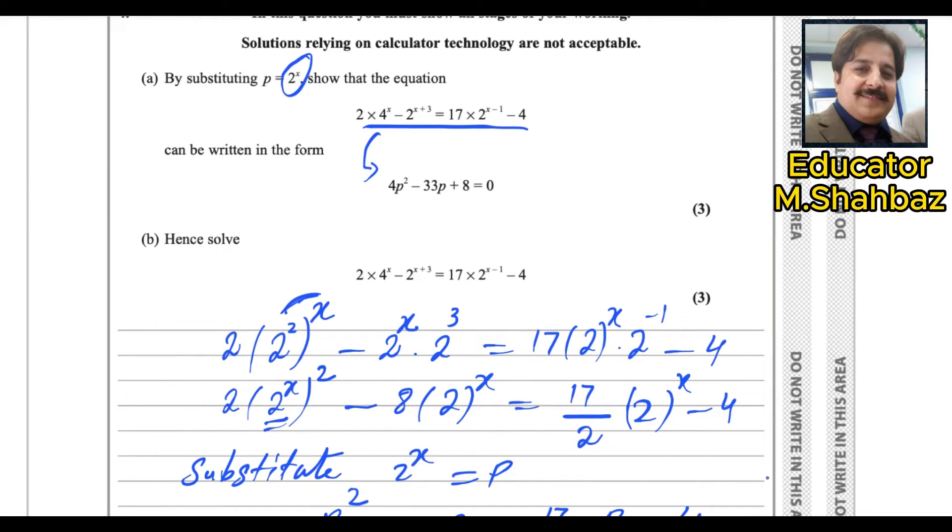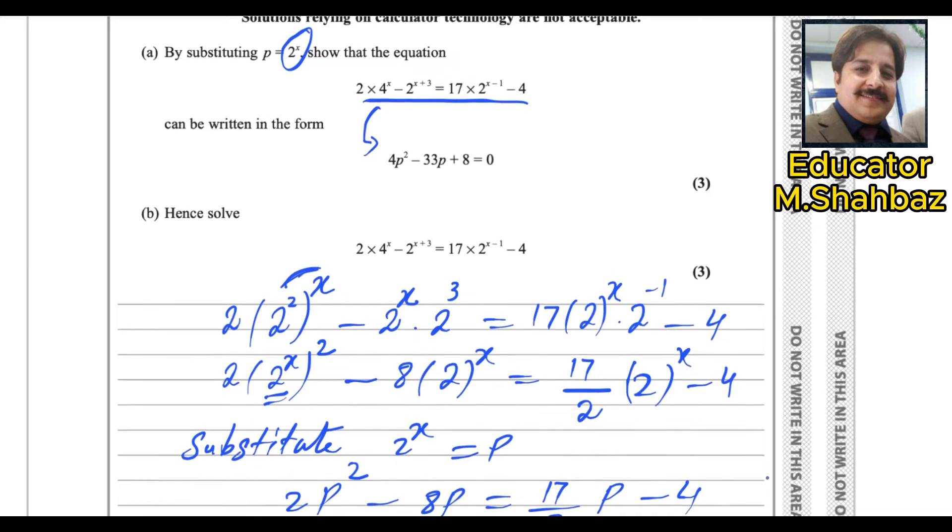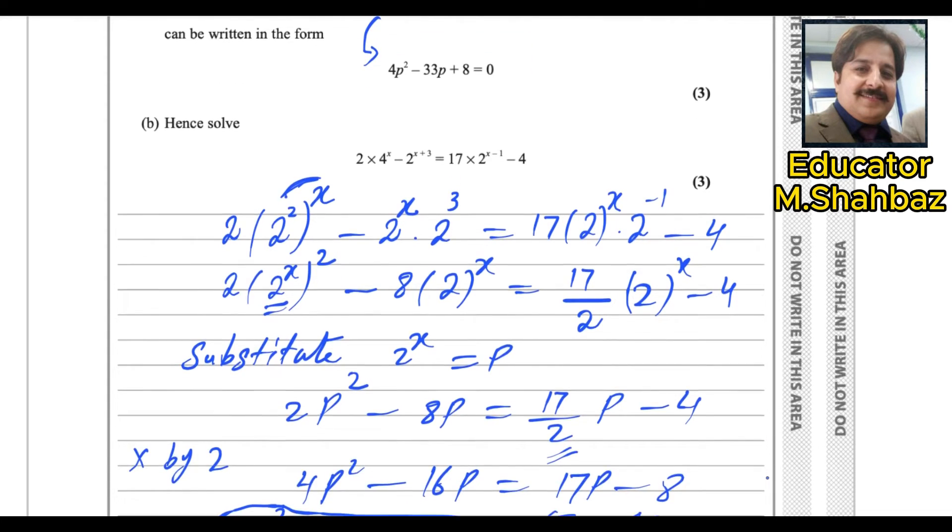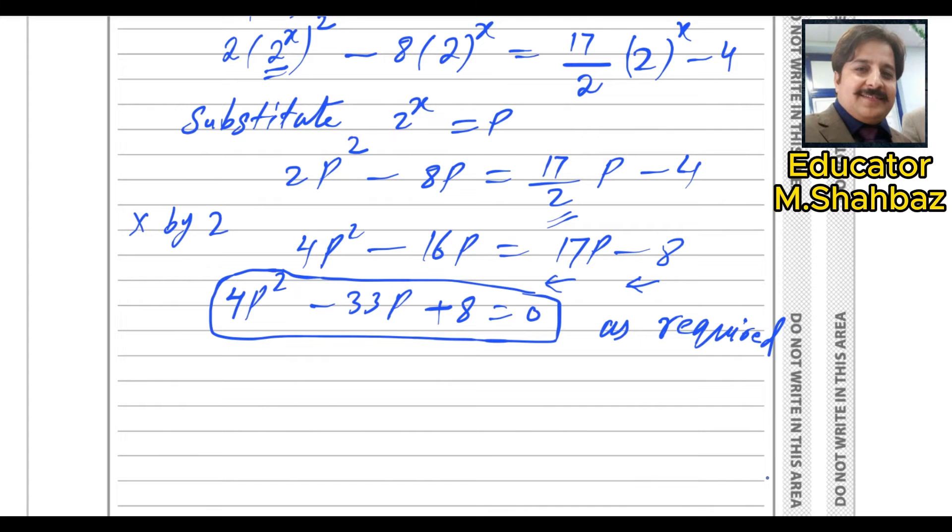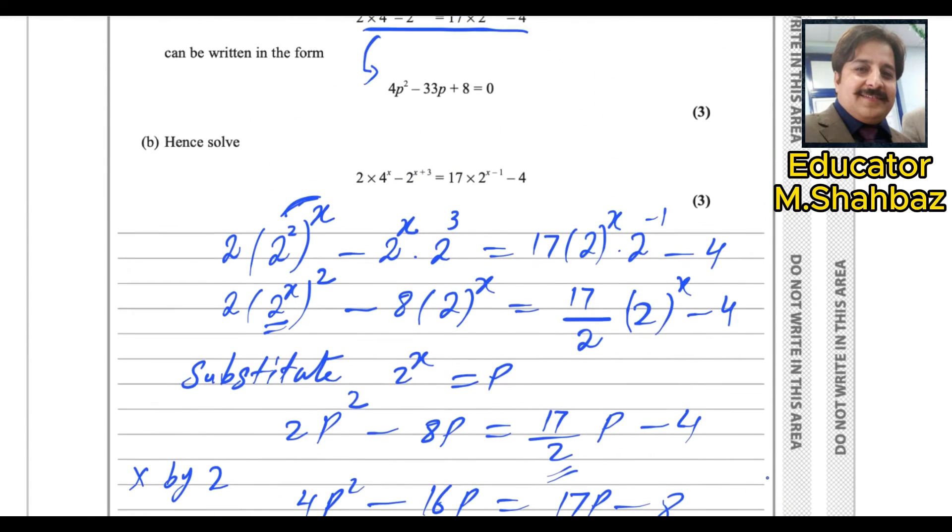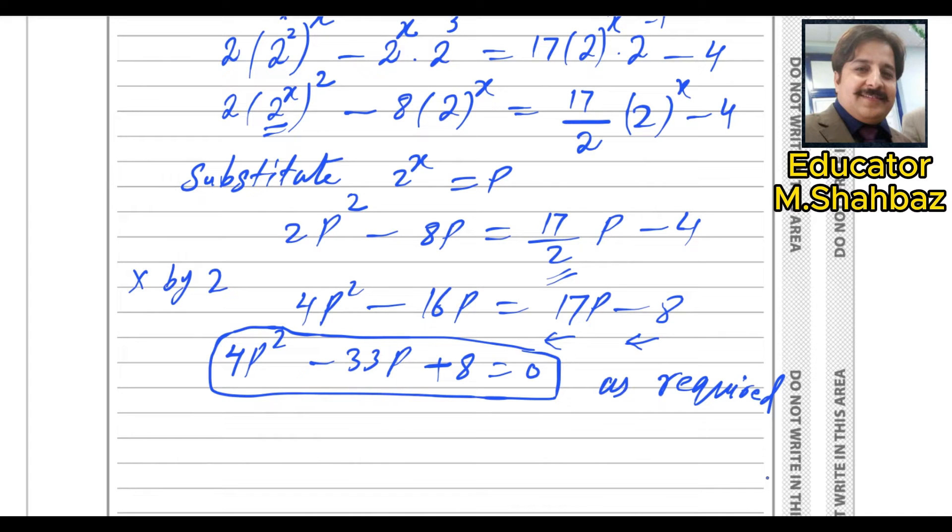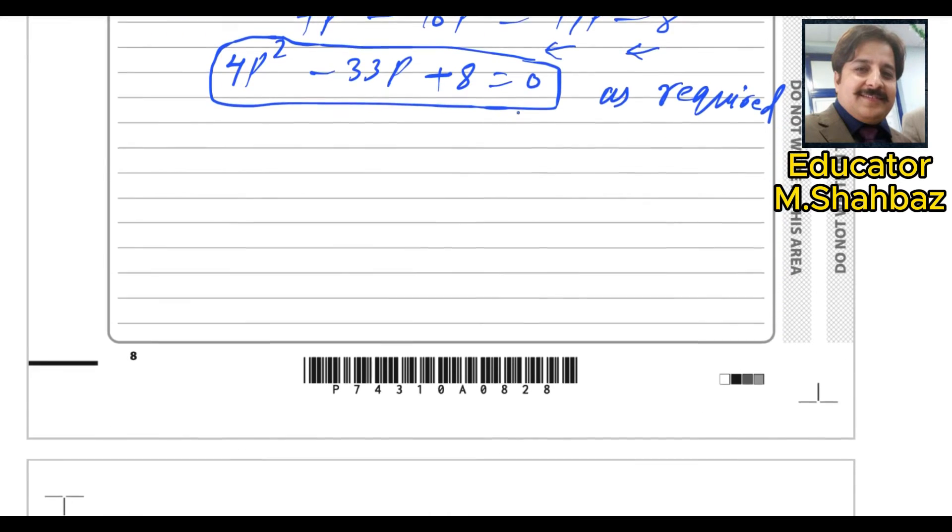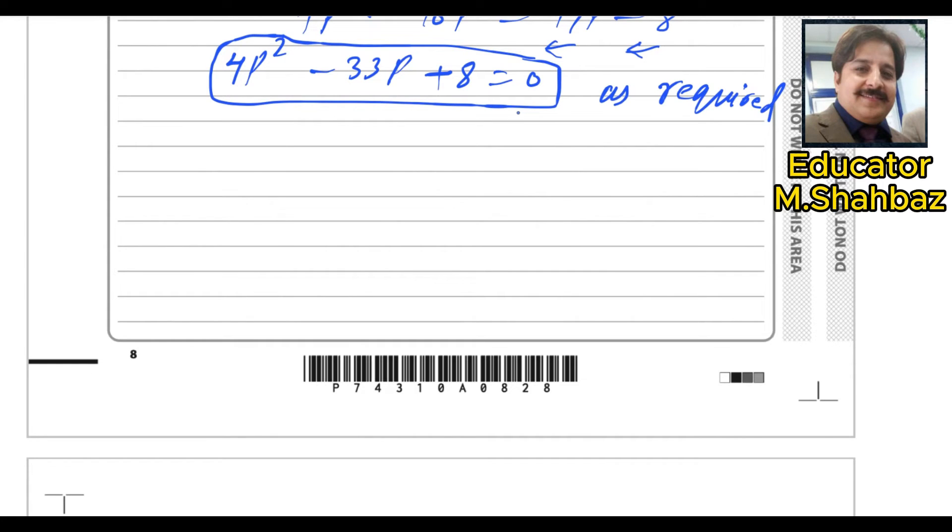Now you need to solve it, because you already converted the given equation into this form, 4p square minus 33p plus 8. So if you solve this equation, it means you are solving the second part, hence solve this. So that is difficult to solve. This thing is difficult to solve. So instead of solving this, we will solve this one. It is a quadratic, simple quadratic. You can use a quadratic formula. You could use a factorization method. Whatever method you want, it's up to you.